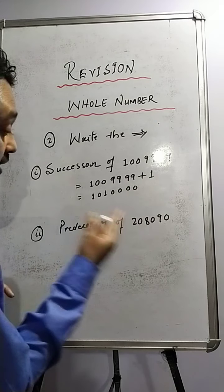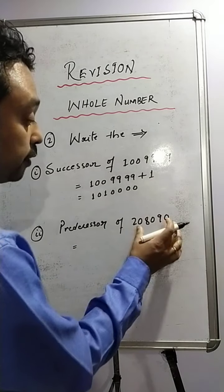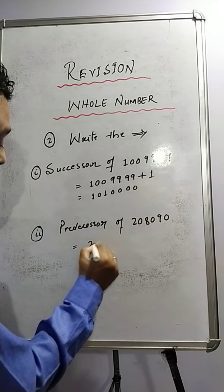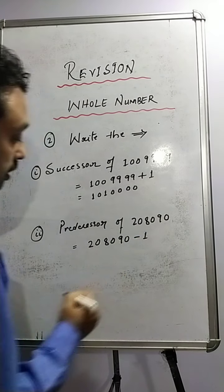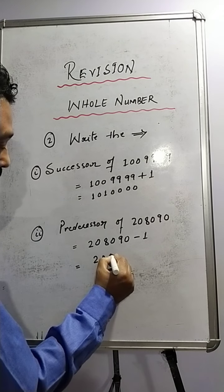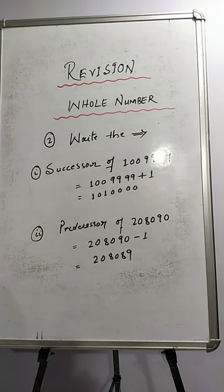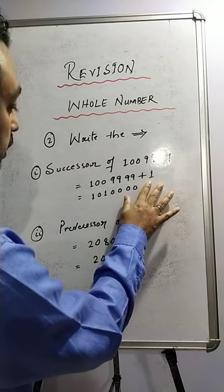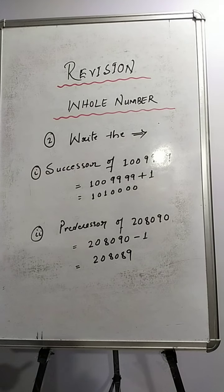In case of predecessor, we have to subtract 1 from the given number. So that would be 2,08,090 minus 1. The answer is 2,08,089. The logic is: for successor you add 1, and for predecessor you subtract 1 from the given number.